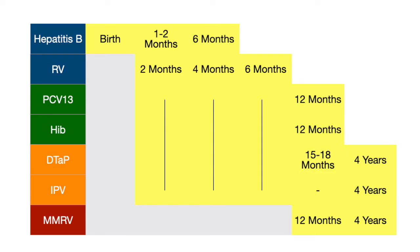The chart is organized by number of doses, increasing as you go down the table. For memory tricks: hepatitis B is the only vaccine given at birth; rotavirus is the only oral vaccine; and MMRV is the only one with its first dose at one year of age. I like to group PCV13 and HIB together since they lead to similar infections and are given at the same times. I also group DTaP and polio together, noting that DTaP has an extra dose at 15 to 18 months that polio does not.